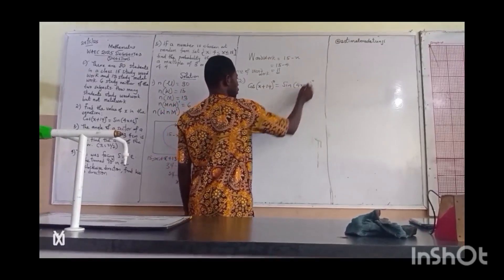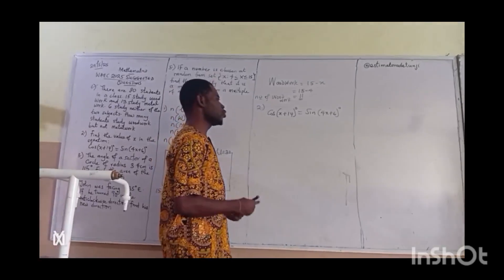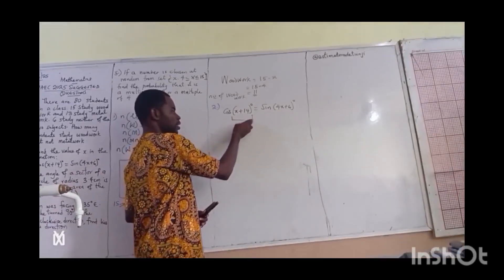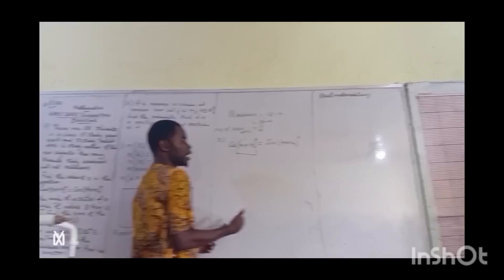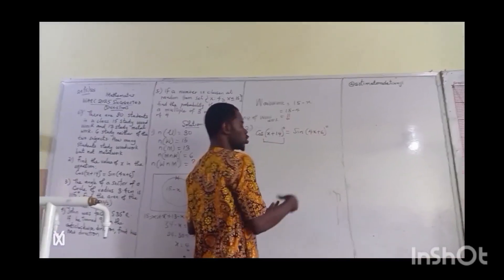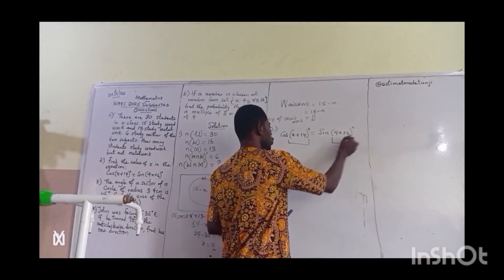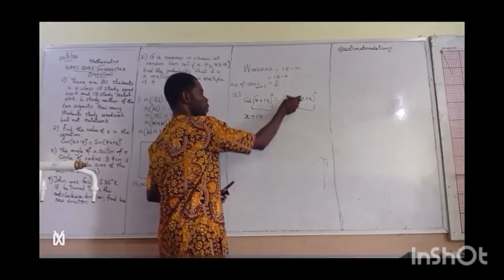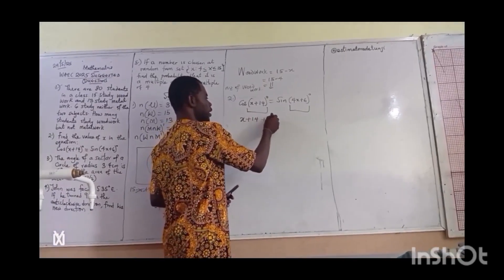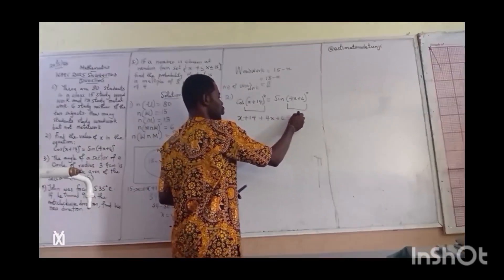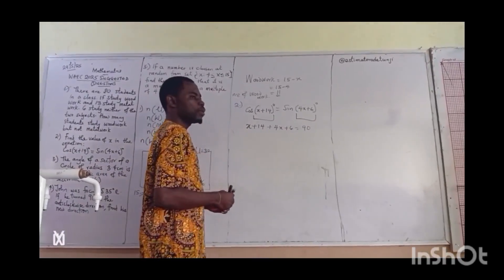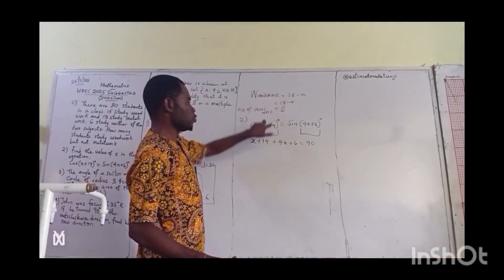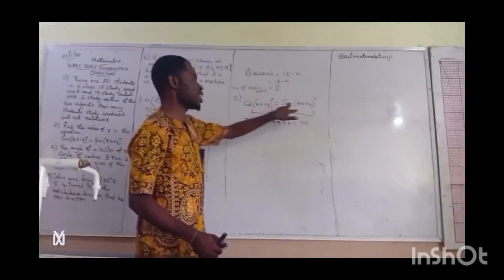Question number two says: cos(x + 14°) = sin(4x + 6°). Since we know that the two angles must sum to 90, we add them: x + 14 plus 4x + 6 equals 90. The rule tells us to sum the two angles equal to 90.